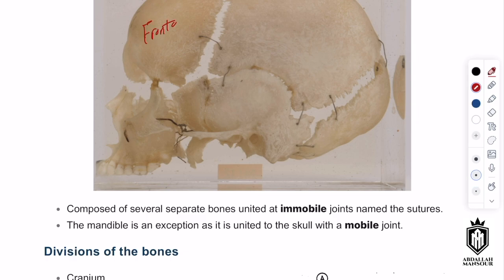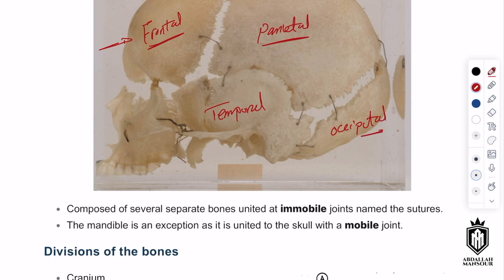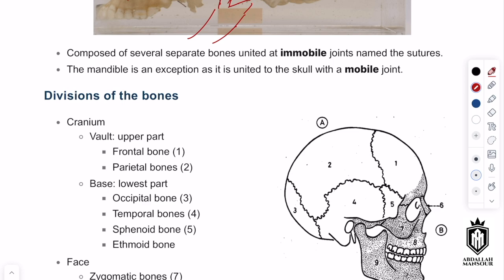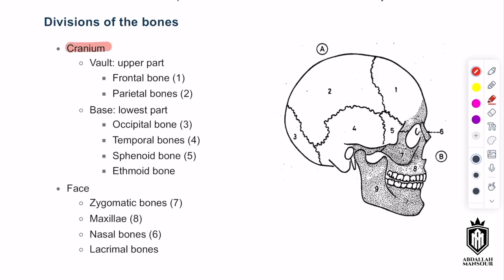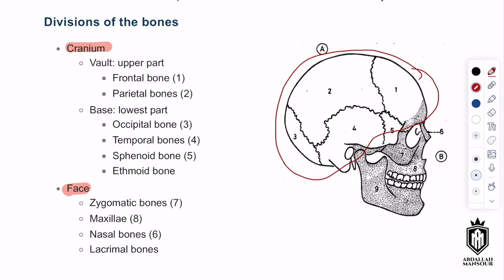The frontal bone is the bone at the front — your forehead. Then you have the parietal bone, which is the highest part of the skull, the temporal bone, and at the back the occipital bone. You also have the zygomatic bone, the maxillary bone, and of course the mandible with its head and body. These bones can be broadly classified into the cranium — where your brain sits — and the face.